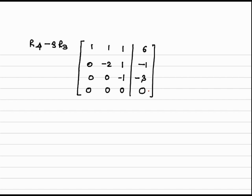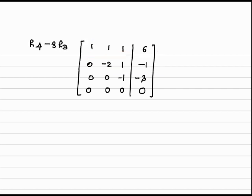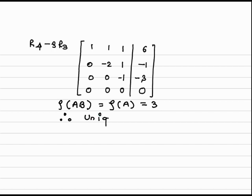Now we find the rank of this matrix. The rank of a matrix is the number of non-zero rows. In this matrix, the first, second, and third rows are non-zero. So the rank is 3. Therefore, rank of A|B equals rank of A equals 3, which equals the number of unknowns. Therefore, this particular system has a unique solution.